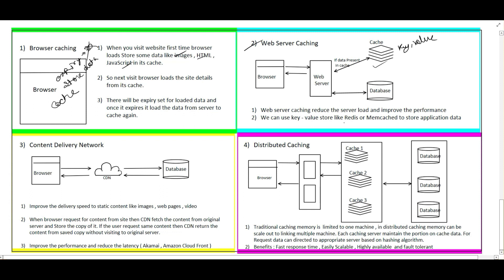This web server caching technique can use Redis or Memcache — those are key-value stores used here. The third type is Content Delivery Network (CDN). CDN is used to improve the delivery speed of static content like images, videos, web pages, and multimedia content. When the browser requests a website connected to a CDN, the CDN receives the request, queries the original database, gets the requested content, copies it to the CDN itself, and returns it to the browser. For subsequent requests, the CDN returns the content directly without querying the database. This improves performance and reduces latency. CDN options include Akamai and Amazon CloudFront.